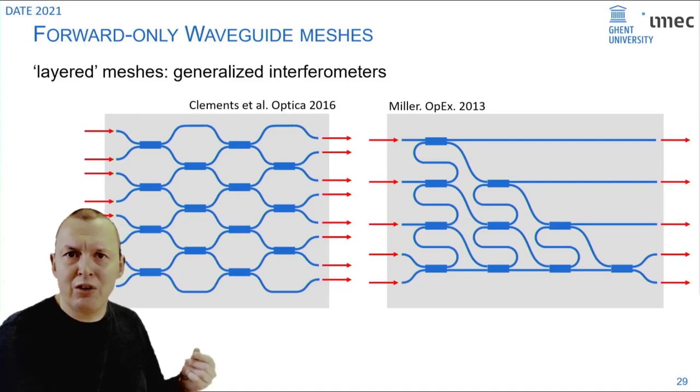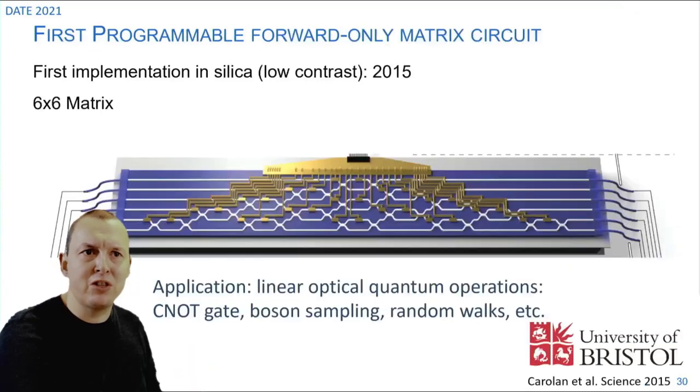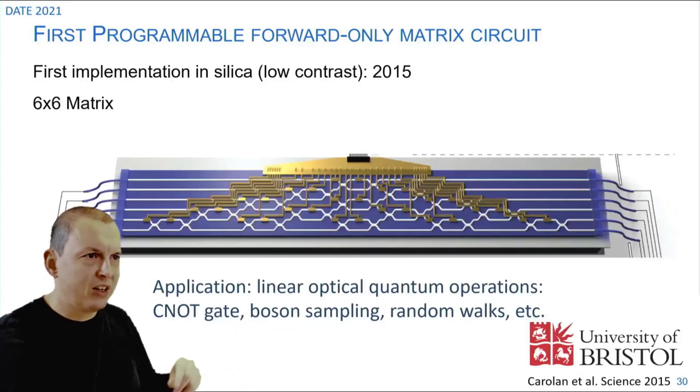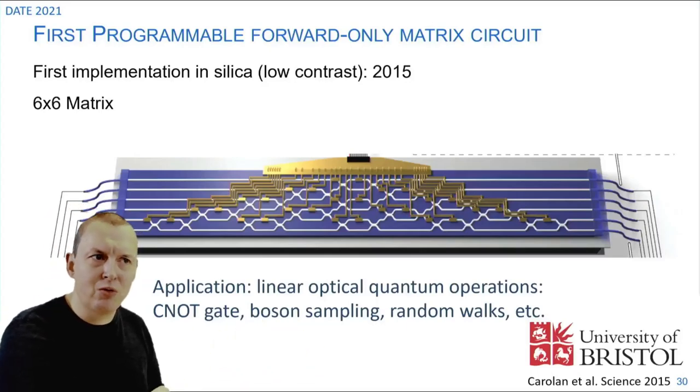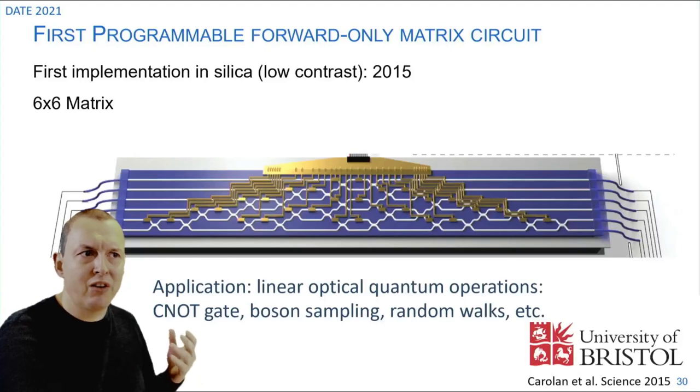Such a universal linear circuit was first demonstrated by the University of Bristol in 2015 and they showed a 6x6 matrix on a fairly large chip because they used a low index contrast material system.